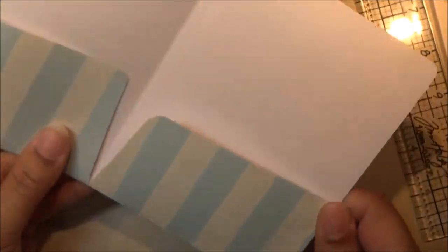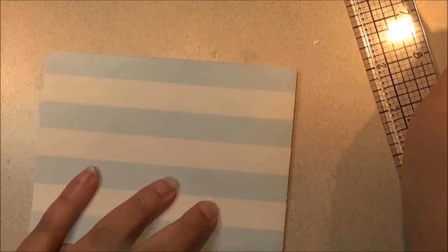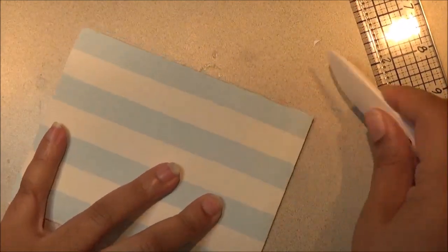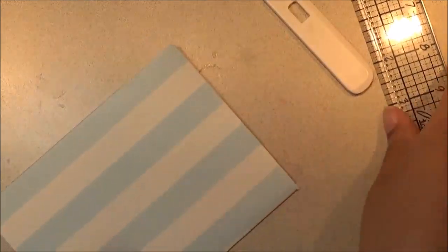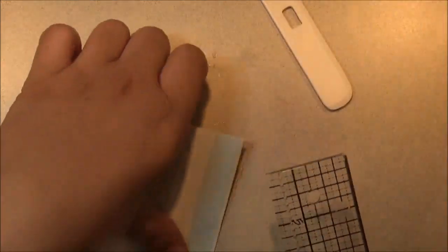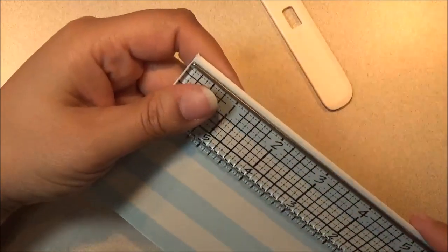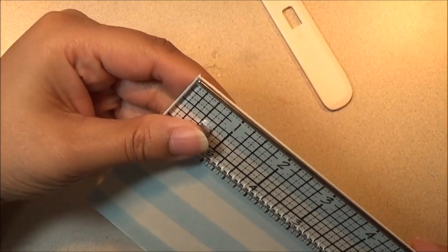And then we'll glue the other side. Very simple. And then you just crease that down. Crease that down. And then I'll give you the measurements of what the little folder is. You can make your own sizes like I said.